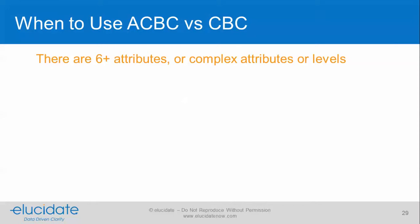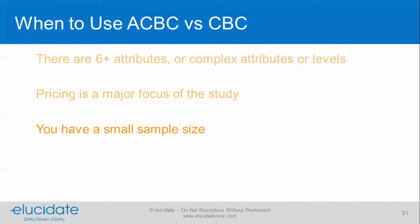So when do we use ACBC over CBC? If you've got six or more attributes, or you have complex attributes and levels. ACBC is somewhat of an educational exercise as respondents go through the various sections, so we can do attributes and levels that have a slightly higher cognitive load. If pricing is a major focus of your study, ACBC is a good choice because of its flexibility in price presentation and modeling. Also if you have a small sample size, or if respondent engagement is truly important.